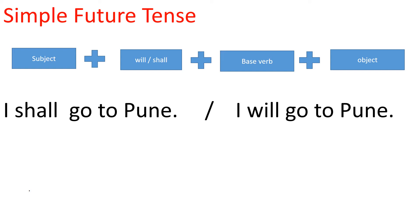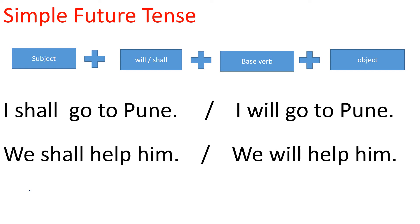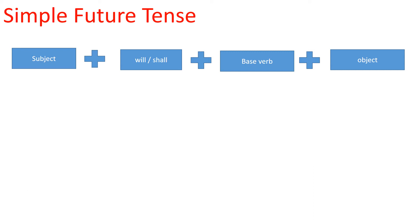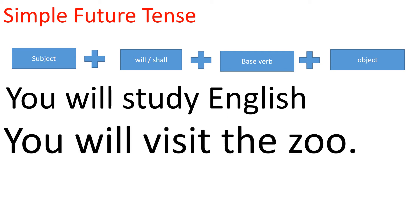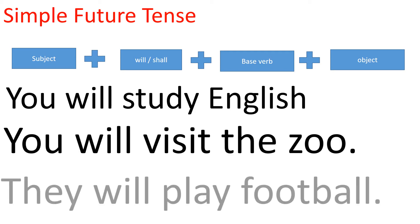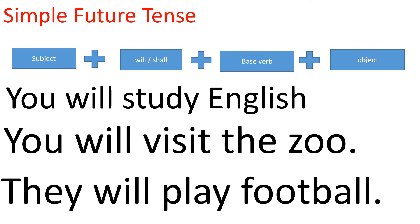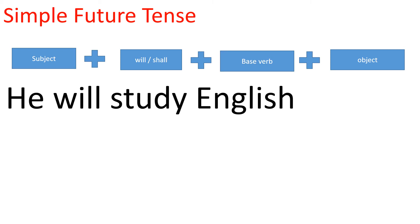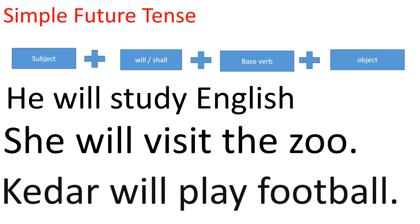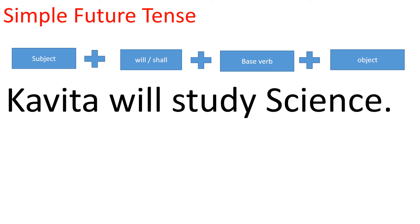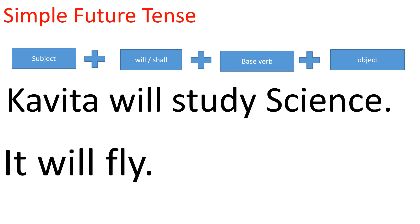I shall go to Pune. I will go to Pune. We shall help him. We will help him. You will study English. You will visit the zoo. They will play football. He will study English. She will visit the zoo. Kedar will play football. Kavita will study science. It will fly.